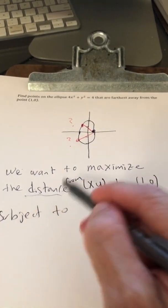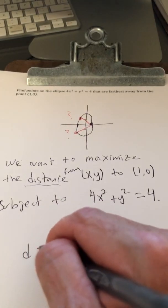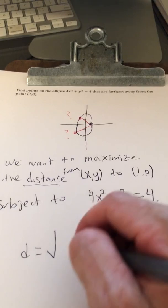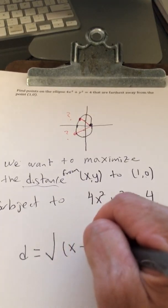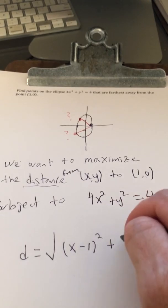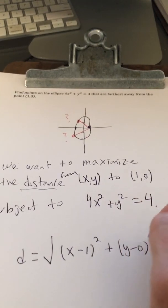Now, a distance, you all know the distance formula. So the distance from (x, y) to (1, 0) is the square root of (x minus 1) squared plus (y minus 0) squared.